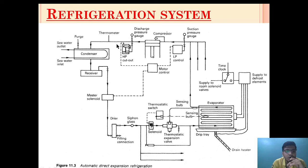The high pressure refrigerant gas will be cooled in the condenser by seawater or fresh water. As it is cooled, the gas form of refrigerant at high pressure will be collected in a receiver unit in liquid form. From there, the liquid refrigerant will flow past through a master solenoid and then through a dryer, to eliminate any mist particles, water particles, or any carryover of oil particles from the compressor.